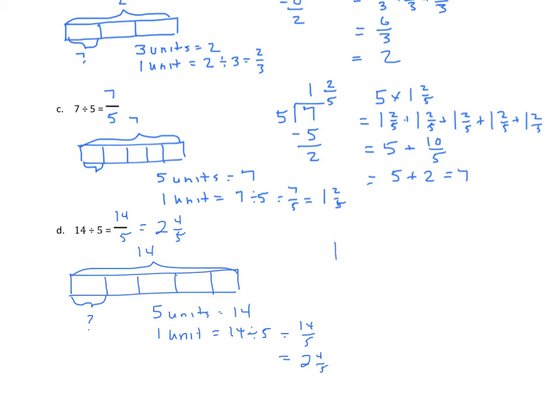Now we'll do the division. 5 goes into 14 twice, 2 times 5 is 10, I get a remainder of 4. The remainder becomes my numerator, my divisor is my denominator.